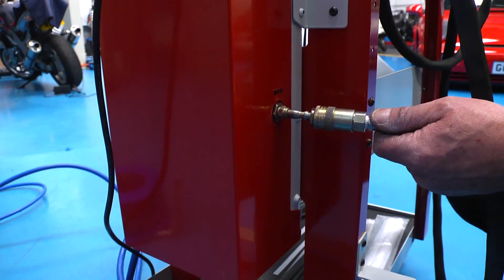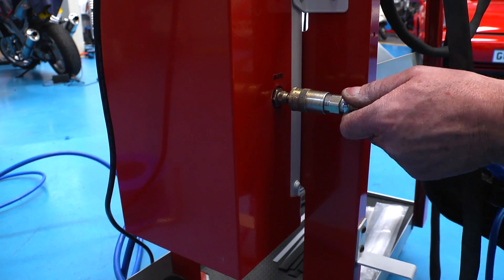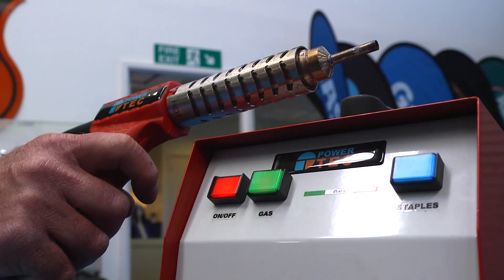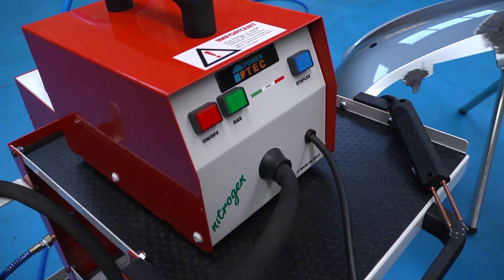Compressed air is used to maintain consistent temperature between welds. The nitrogen is only activated when pulling the trigger so that it is not wasted between welds.